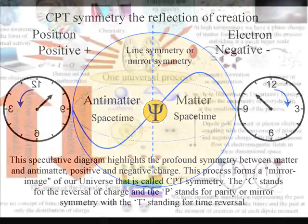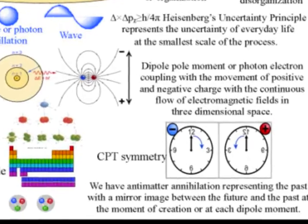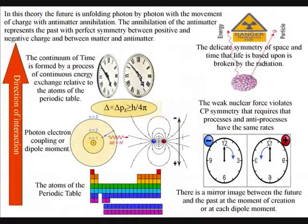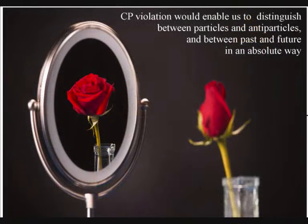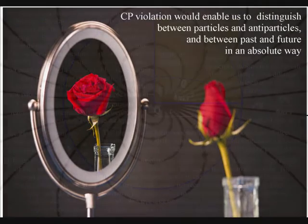In the lower right of the diagram we see this as symmetry forming and breaking in the form of anti-matter annihilation representing the past with a mirror image between the future and the past at the moment of creation or at each dipole moment.